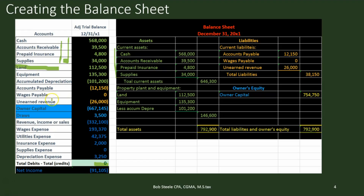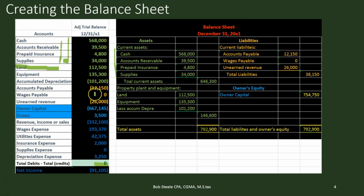Then we go to the liabilities. We only have three liabilities, so we've got current liabilities — those are liabilities that are paid within a year. All we're going to do is copy these over. We've got accounts payable, wages payable, and unearned revenue. We're going to indent, pull them into the inner column — these are not debit and credit columns, just subcategories — and sum them out to the right-hand side. They were represented with brackets because they're credits, but over here we represent them in terms of plus and minus. If we sum these up, we get $38,150.